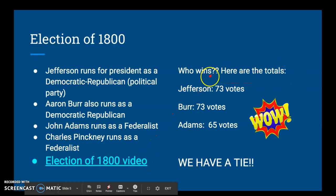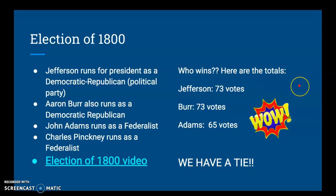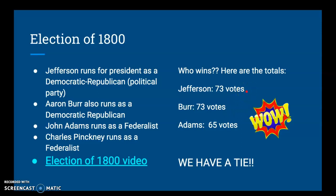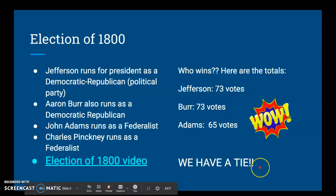Here's something interesting — there's another reason why this election is crazy. After the Electoral College tallied the votes, Thomas Jefferson gets 73 votes and John Adams gets 65 votes. But the other candidate from the Democratic Republican Party, Aaron Burr, also got 73 votes — he's now tied with Thomas Jefferson. We still used the rule that whoever gets the most electoral votes is president and whoever gets the second most is vice president, but what do we do? We have a tie.